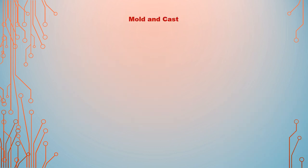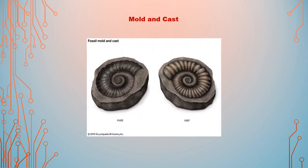Next type: mold and cast. A replica of the plant or animal is preserved in sedimentary rocks. Sometimes an organism gets buried in sediment and dissolved by underground water, leaving a hollow depression called a mold. It shows the original shape but does not reveal the internal structure — only the outside structure. When minerals or sediment fill the hollow depression, they form a cast.